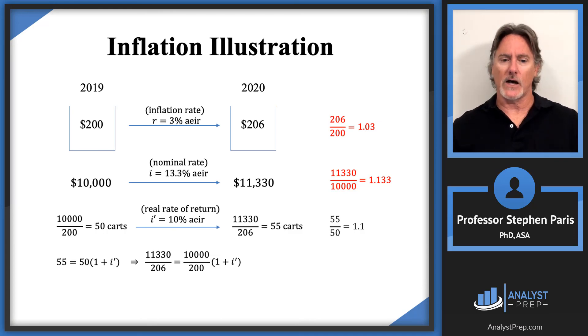From the bottom equation in red, the 11,330 equals 10,000 times (1 + i), so the 11,330 is 10,000 times one plus the nominal rate. Likewise, the 206 is 200 times (1 + r). Let's substitute those in.